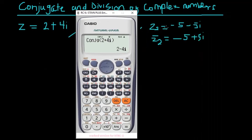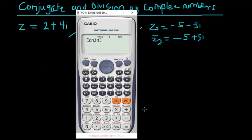Now let's find the conjugate of the second value. Clear everything, then click Shift, Complex, and 2 again. Enter -5 - 5i and there you have it — it's as simple as that.